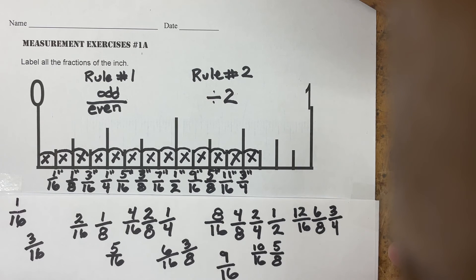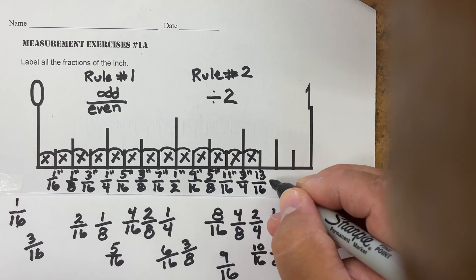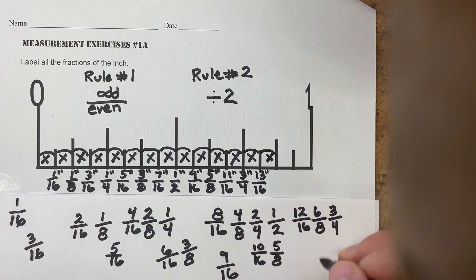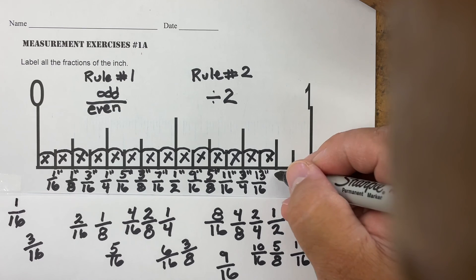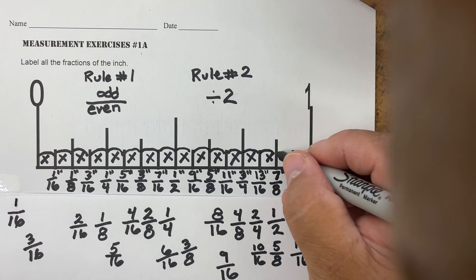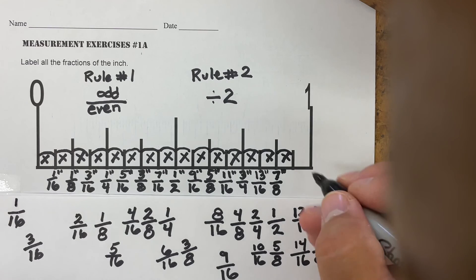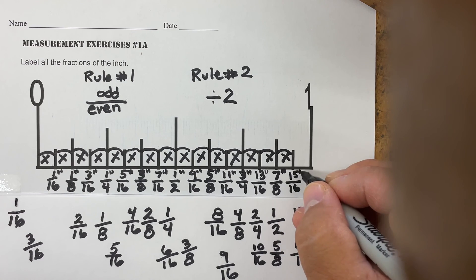The next one is thirteen-sixteenths. Thirteen over 16 is odd over even, so that's my final answer: thirteen-sixteenths of an inch. The next increment gives me fourteen sections out of a possible 16: two goes into fourteen seven times, two goes into 16 eight times — that's odd over even, so the final answer is seven-eighths of an inch. The next one brings me to fifteen sections out of a possible 16 — odd over even — so the answer is fifteen-sixteenths of an inch.